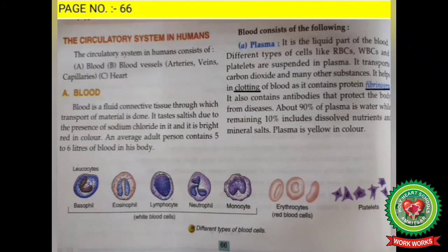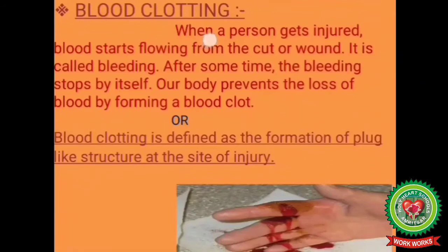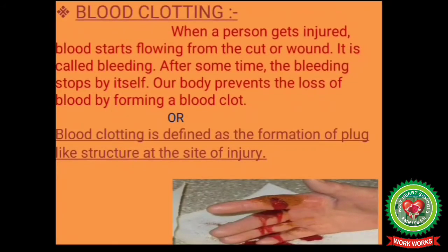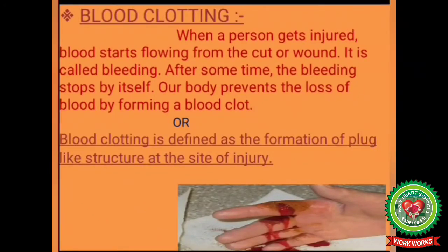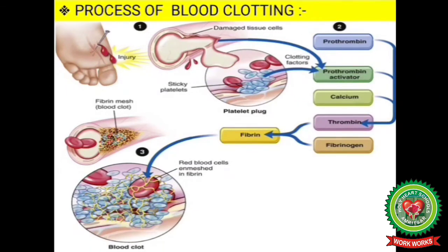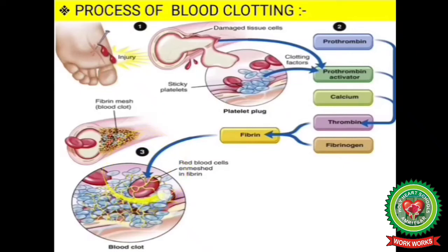What is blood clotting? When a person gets injured, blood starts flowing from the cut or wound — this is called bleeding. After some time, the bleeding stops by itself. Our body prevents the loss of blood by forming a blood clot. Blood clotting is defined as the formation of a plug-like structure at the site of injury. An enzyme released from the platelets helps in the production of thrombin. Thrombin converts soluble fibrinogen into insoluble fibrin, which forms a mesh-like structure in which RBCs get entangled, resulting in the formation of a clot or plug that prevents blood loss.